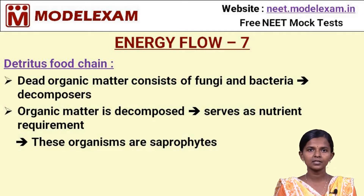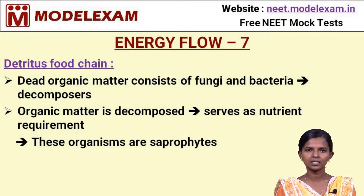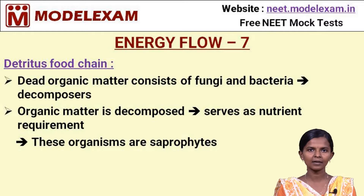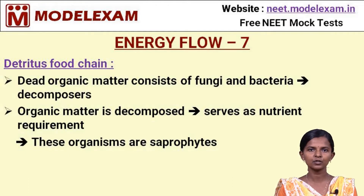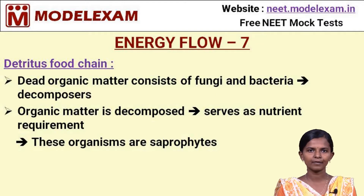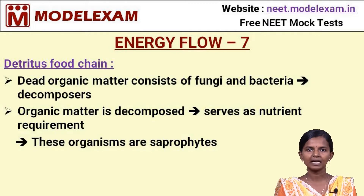In the detritivore food chain, dead organic matter is converted into inorganic substances by organisms called decomposers, which include bacteria and fungi. The organic matter is decomposed into nutrients used by plants, and this process is carried out by organisms termed saprophytes. This food chain is called the detritivore food chain, though saprophytes are not typically indicated on an ecosystem pyramid.